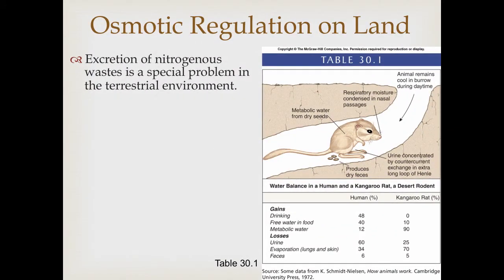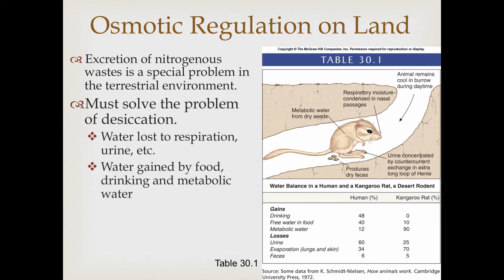Let's move onto land and talk about osmotic regulation challenges that terrestrial organisms face. They still have to get rid of their nitrogenous waste and want to do so using as little water as possible, particularly in dry environments. They face the challenge of desiccation or drying out. Water can be lost in more ways than just excretion — water is lost during respiration, through evaporation, and in the production of urine during excretion.